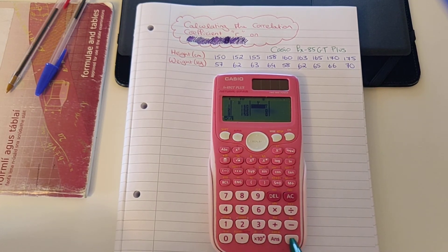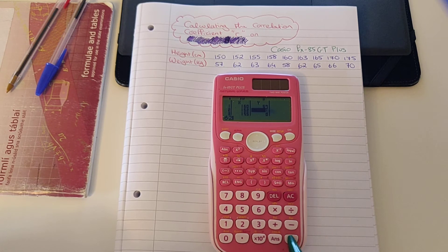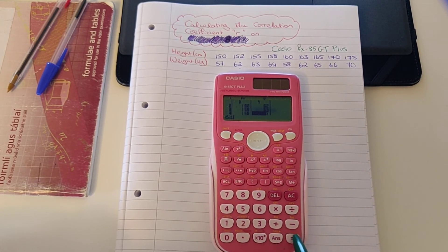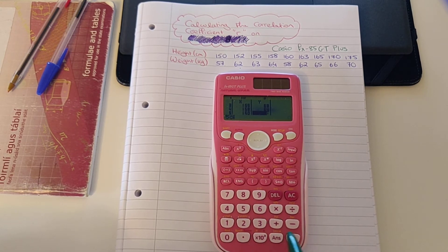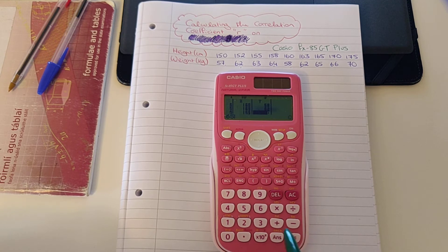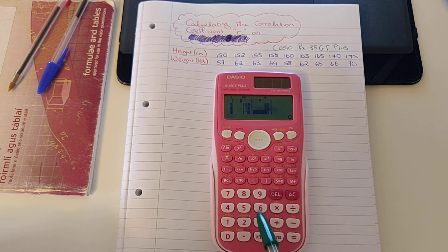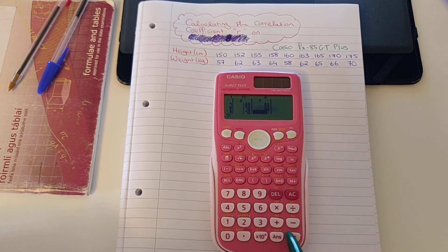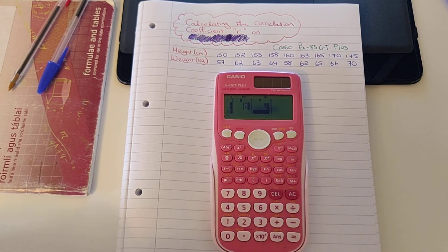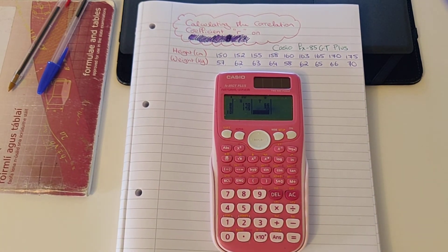So we have 57 equals, 62 equals to move down the column, 63 equals, 64 equals, 58 equals, 62 equals, 65 equals, 66 equals, and 70 equals. 67 equals total. So I know I've effectively used the table.